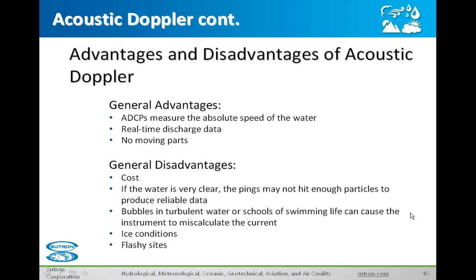Some advantages and disadvantages of ADCPs: the advantage is you're going to get real-time discharge data. ADCPs measure the absolute speed of the water, so you know you're getting the actual data that you want. Disadvantages: they can be kind of costly compared to other options we've spoken about — this is going to be your most expensive option. For icy conditions, it works great underneath the surface of the ice and can still measure velocity and calculate discharge below the surface, but it also tries to measure the surface of the water. When there's ice up there, it can disrupt that measurement and give some erroneous data.